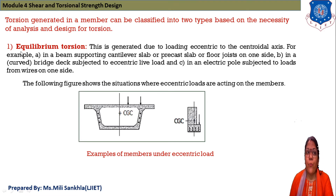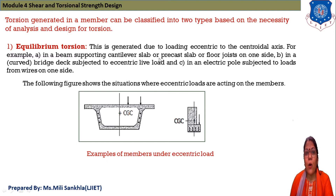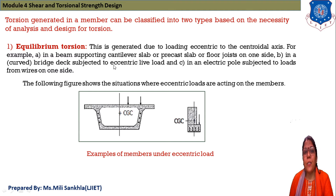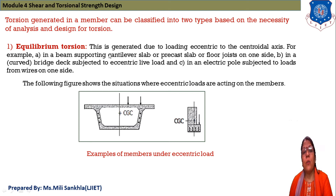Torsion generated in a member can be classified into two types based on the necessity of analysis and design. First is equilibrium torsion, which is generated due to loading eccentric to the central axis. Examples include a beam supporting a cantilever slab or precast slab or floor joist on one side, a curved bridge deck subjected to eccentric live load, and an eccentric pole subjected to load from wire on one side.